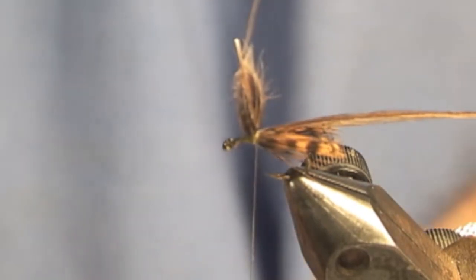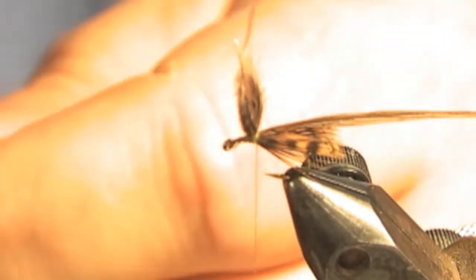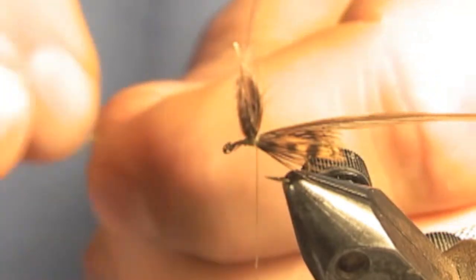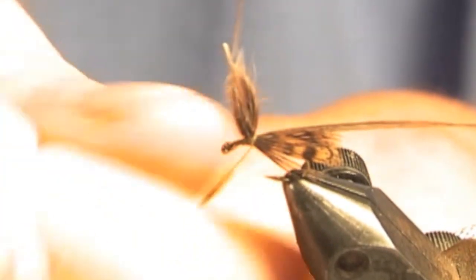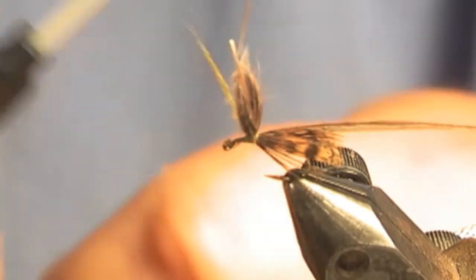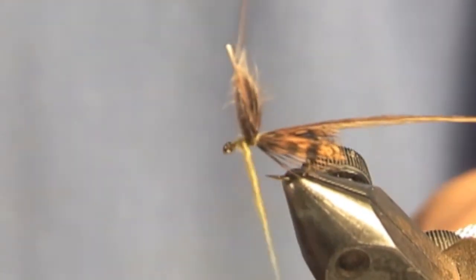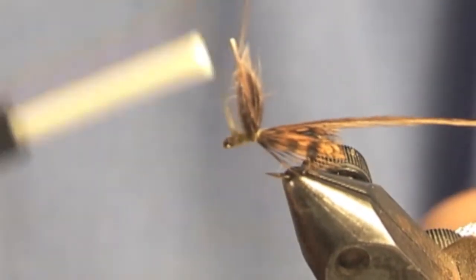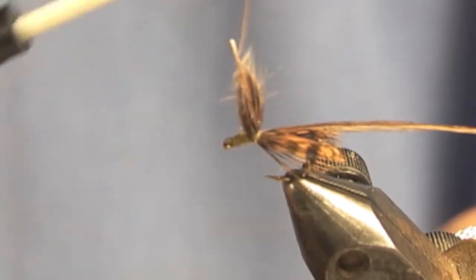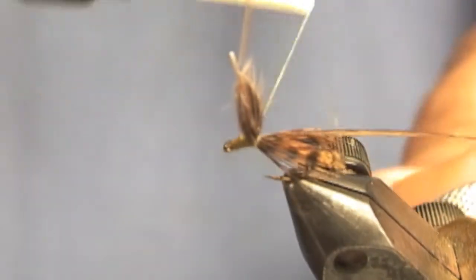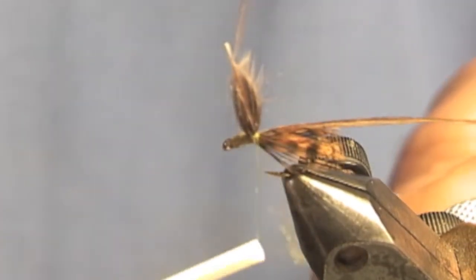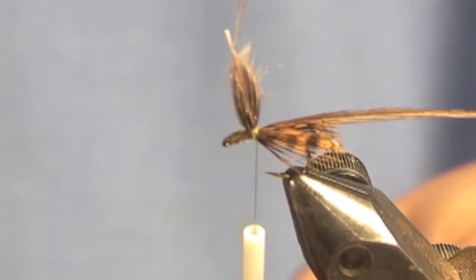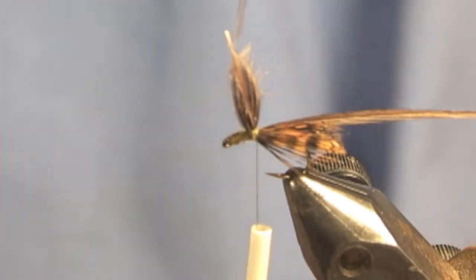I think he goes the other way around the hook. You get a little bit more dubbing. Even with sweaty hands, it just sticks to the hook a little bit better. Just bring it up to the eye and bring the thread back to there. A couple wraps around the post to give the hackle something to hang on to. I'll leave the thread hanging off the back.